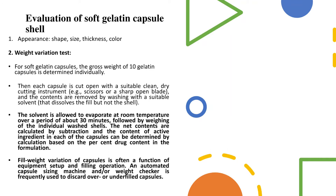Since all soft gelatin capsules contain a liquid encapsulated mass, the empty shells are washed with a suitable solvent. The solvent is then allowed to evaporate at room temperature over 30 minutes, followed by weighing of the individual washed shells. Once the excess solvent is removed, the net contents are calculated and the active ingredient content in each capsule can be determined based on the percent drug content in the formulation.